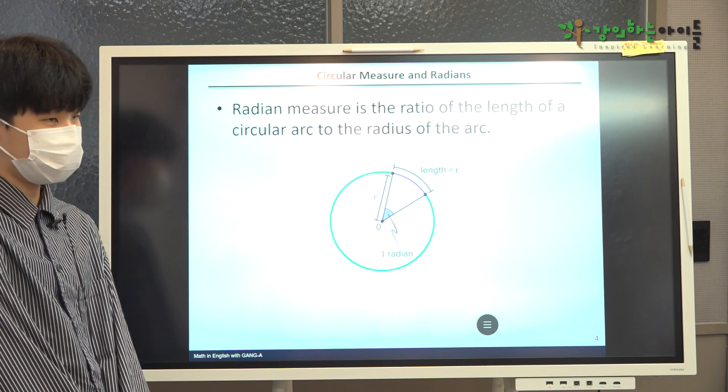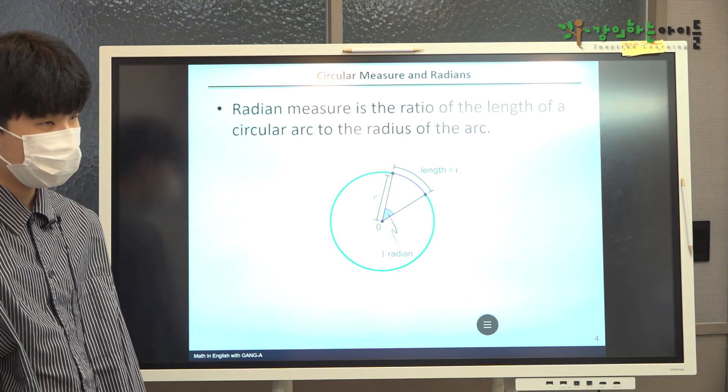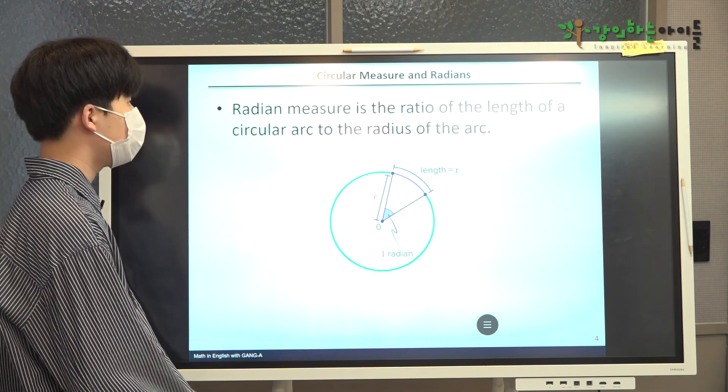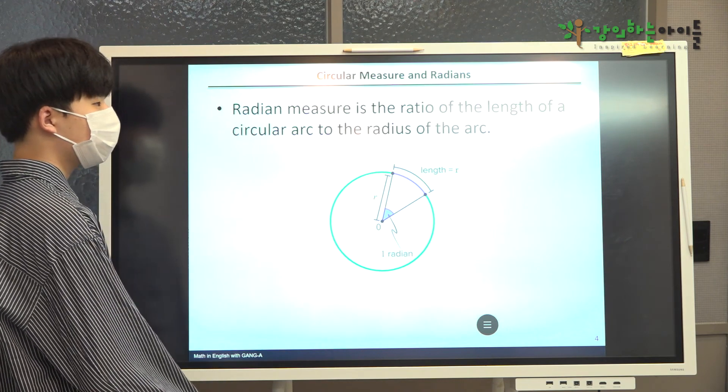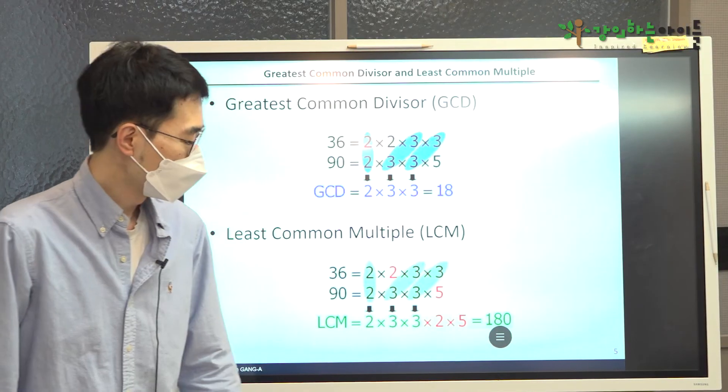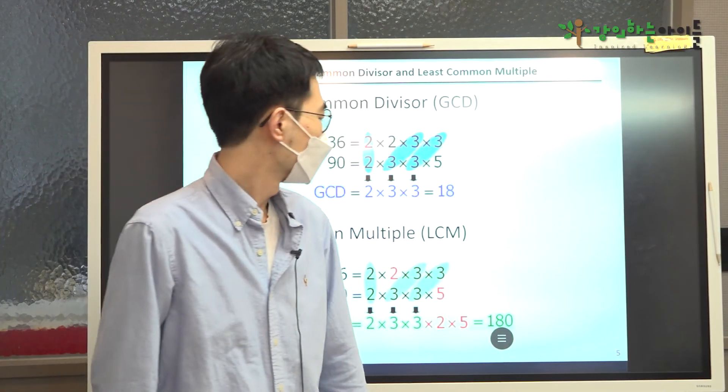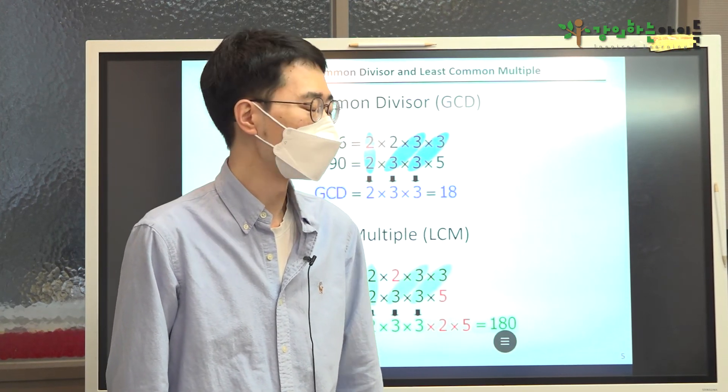So, my question is, do we have a unit for radian measure? Since radian measure is the ratio of the length to a length, there is no unit. Perfect. Okay. Thank you for your presentation. I'm very happy to see all of you do very well.